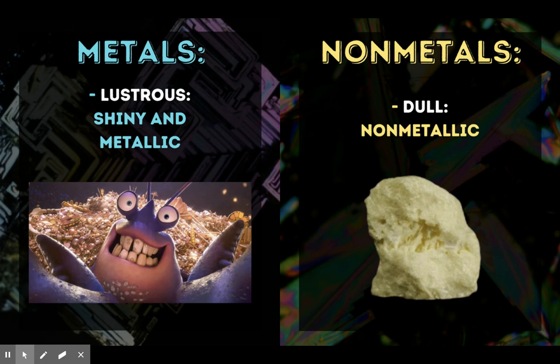Metals are lustrous — so they're like Tamatoa from Moana, they're shiny and metallic. And nonmetals are exactly the opposite: they're dull and nonmetallic, they're not shiny.